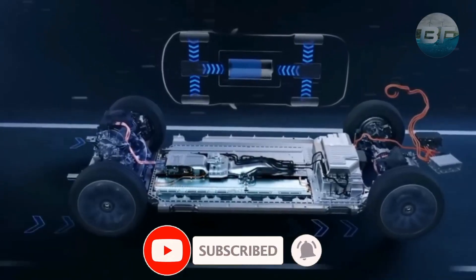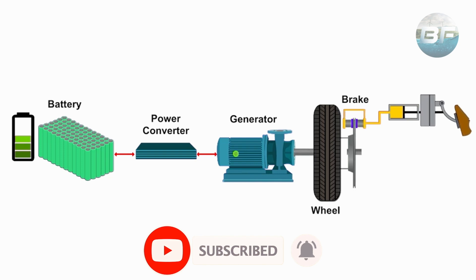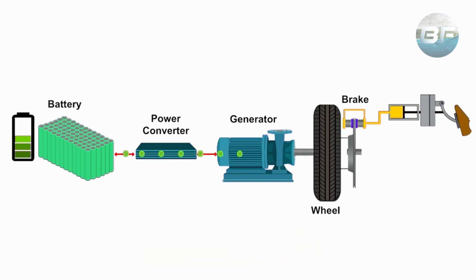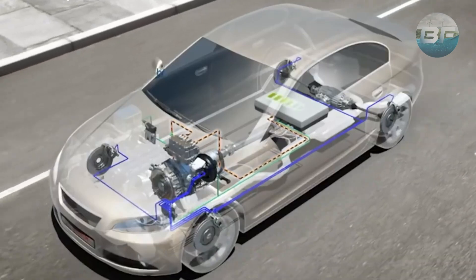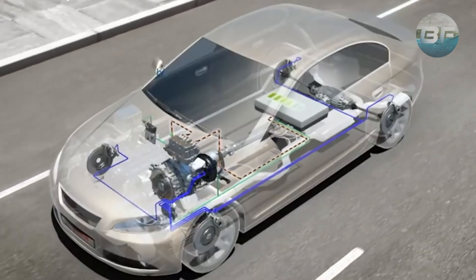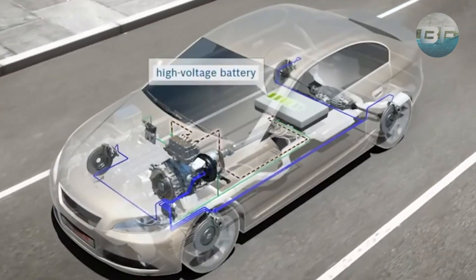The inverter also allows for regenerative braking in electric vehicles. When the driver applies the brakes, the motor operates in reverse, generating electricity and sending it back to the battery. The inverter controls the flow of this energy, ensuring that it is stored in the battery for later use.